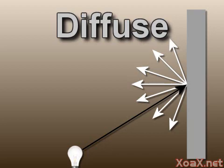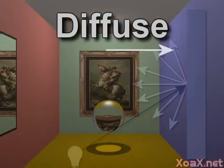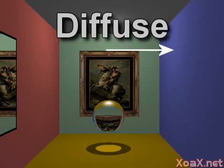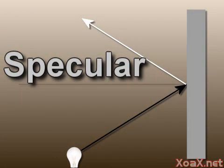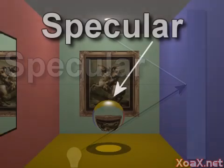Diffuse reflections exist for objects with rough surfaces like a painted wall or a piece of wood. Along this wall, we can see the variation of the diffuse component. The specular term represents light that is directly reflected from a surface. Specular reflection exists on smooth surfaces like glass or metal.